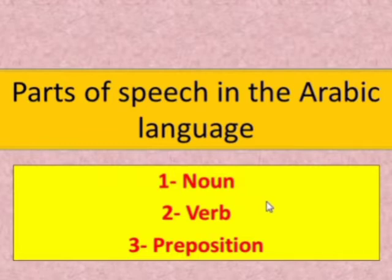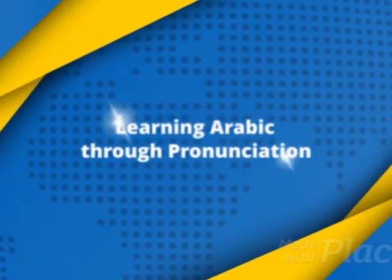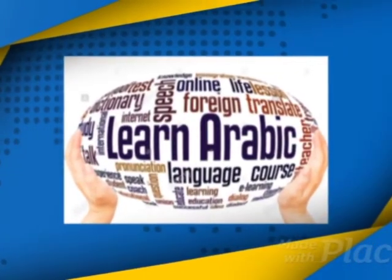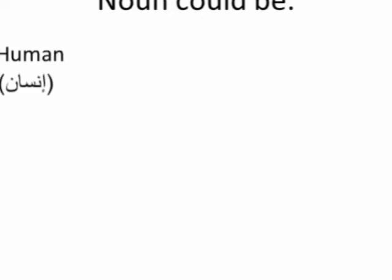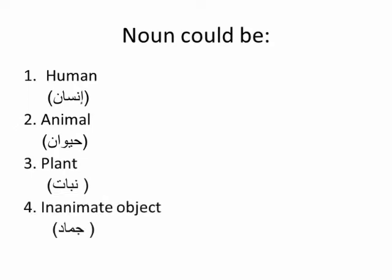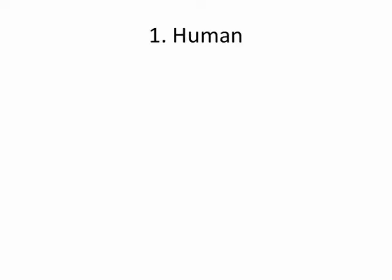Parts of speech in the Arabic language are nouns, verbs, and prepositions. We'll start with nouns. Nouns could be human, which means in Arabic 'insaan'; animal, which means 'hayawaan'; plant, which means 'nabat'; or inanimate object, which means 'jaamed'. So it can be human, animal, plant, or inanimate object.